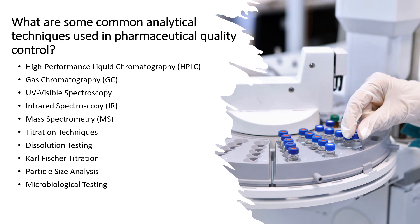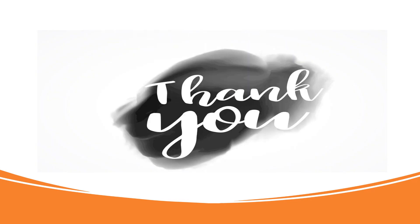Next is microbiological testing, which includes microbial enumeration, sterility testing and microbial identification, used to assess the microbial quality and sterility of pharmaceutical products — particularly sterile dosage forms and biologics. There are many more analytical techniques used in the quality control laboratory, and detailed videos may be made on each. This concludes the basic overview of the quality control laboratory in the pharmaceutical industry. Thank you very much for watching the video.